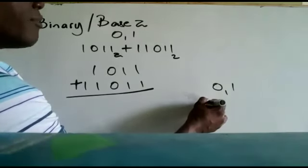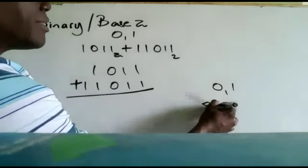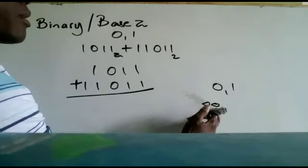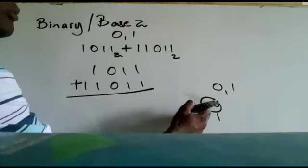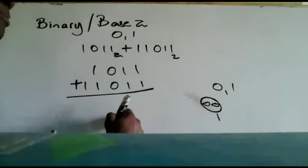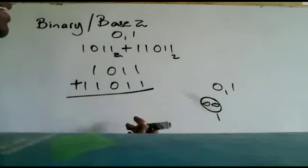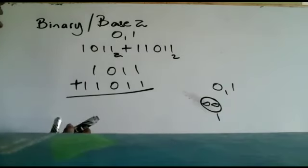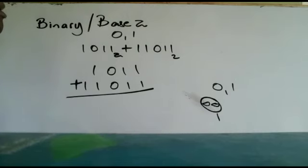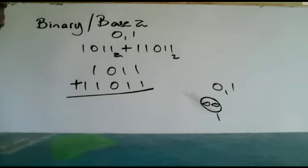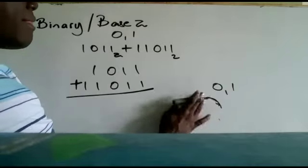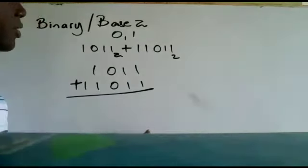As soon as the sum reaches two or more, we find how many sets of two we can get, carry that to the next column, and leave the remainder in the current column. It's the remainders that we write in each column as we work through the addition.